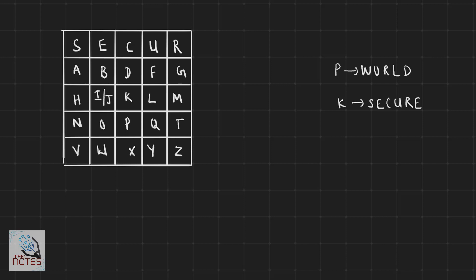Because the English alphabet has 26 letters, but the matrix is 5x5, giving only 25 cells, we combine I and J into one cell. You fill in the matrix properly in this form, placing the keyword letters first, then filling the remaining alphabet letters in order without repeating any letter.